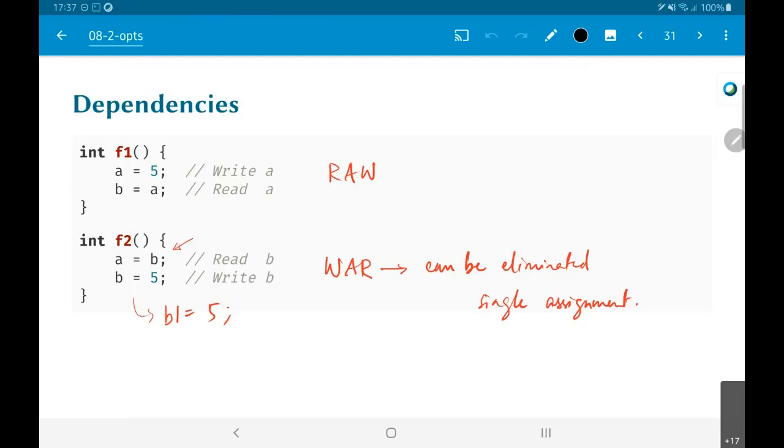f2 on the other hand is doing the opposite. It takes the value of b, reads the value of b, puts it into a. You want to make sure that a gets the old value of b, not the updated value which happens in the next instruction b = 5. So this is basically a write after read.